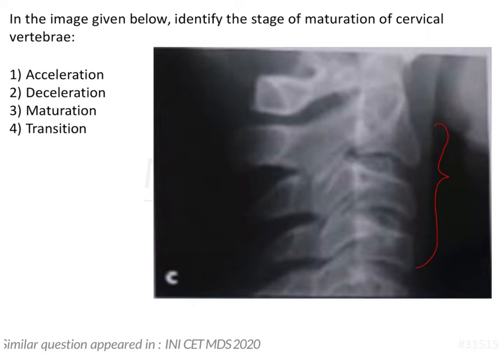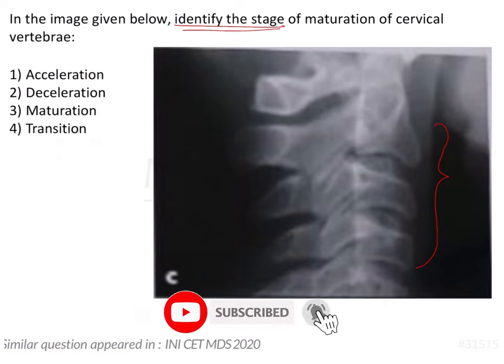Questions regarding the maturation of the cervical vertebrae are very important as well as confusing questions which come in the exam. The kind of questions you can expect are either straightforward questions where they ask you to only identify the stage, or slightly difficult case-based questions where they will not mention the age of the patient. Rather, they can give you clinical features and a radiograph of the cervical vertebrae and ask you to assess the growth status, when to give a particular appliance, correlate cervical vertebrae maturation with the mandibular growth spurt, and assess how much growth potential is remaining.